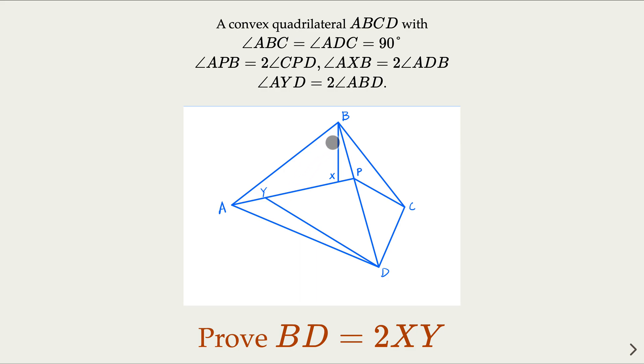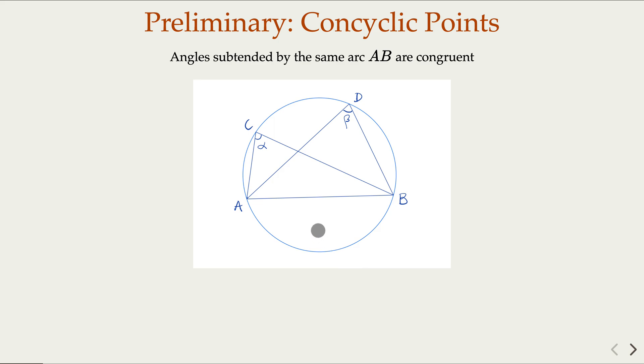Notice that whenever you see these right angles that add up to 180 degrees, then ABCD are on a circle. That's good information you want to catch. In other words, we need to know when four points are on a circle, we have this relationship.